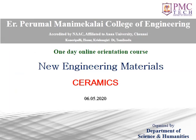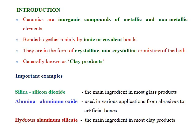Now let us continue our discussion on the topic of ceramics. What is ceramics? Ceramics are inorganic compounds of metallic and non-metallic elements, bonded together mainly by ionic or covalent bonds. They may form crystalline structures, or they may exist in non-crystalline form, or a mixture of both forms. These ceramics are generally known as clay products.